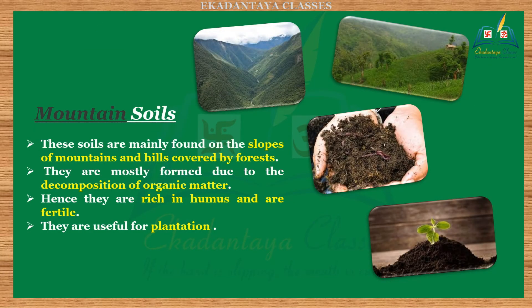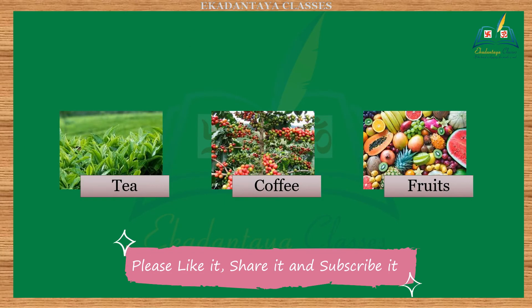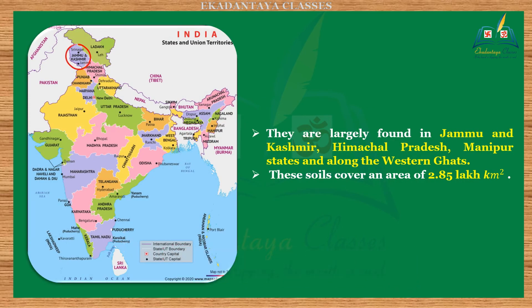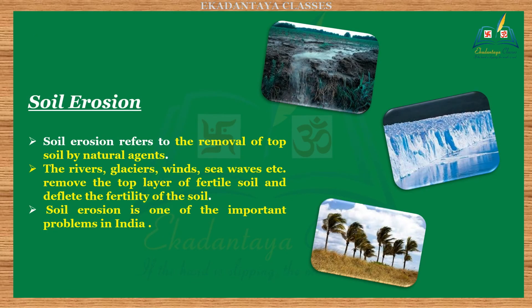Six: mountain soils. These soils are mainly found on the slopes of mountains and hills covered by forests. They are mostly formed due to the decomposition of organic matter, hence they are rich in humus and are fertile. They are useful for plantation crops — for example, tea, coffee, and fruits. They are largely found in Jammu and Kashmir, Himachal Pradesh, Manipur, and along the Western Ghats. These soils cover an area of 2.85 lakh square kilometers.